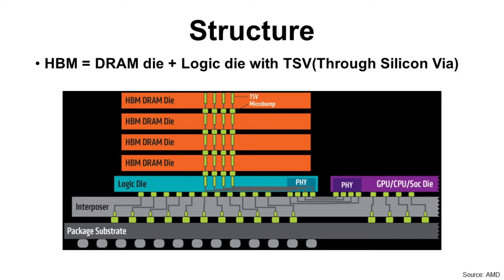Usually, HBM is used for GPU nowadays, but GDDR has been used for GPU so far before HBM. So why did people start to use HBM rather than GDDR?